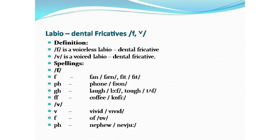Spellings for /f/: the letter F in fan, the letters PH in phone, the letters GH in laugh, the letters FF in coffee. For /v/: the letter V in vivid, the letter F in 'of', the letters PH in nephew.